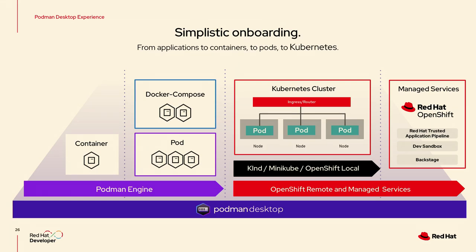The Podman engine can run standalone containers, Docker Compose groups, and pods — but it ends there. Kubernetes, on the other side, will run pods, has ingress or routes to access them, services, multiple nodes in an application. It's complicated, but you can run Kubernetes locally.